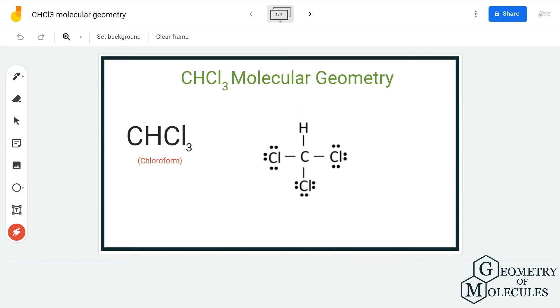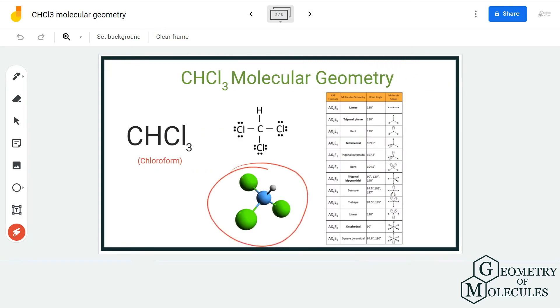According to VSEPR theory, all these atoms will try to position themselves such that they are very far from each other to minimize the repulsive forces between the bonding pairs of electrons. They are going to take a shape in which these forces are at minimum.